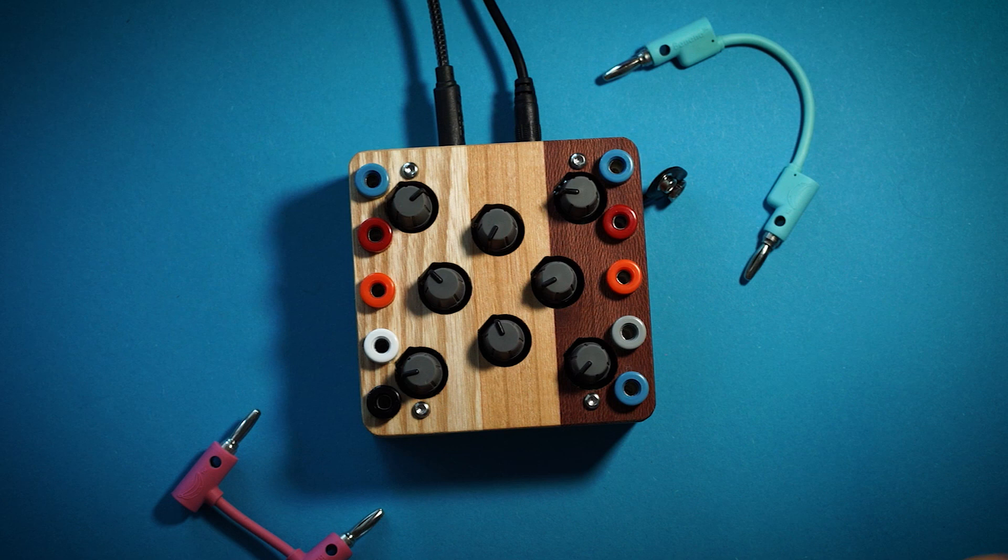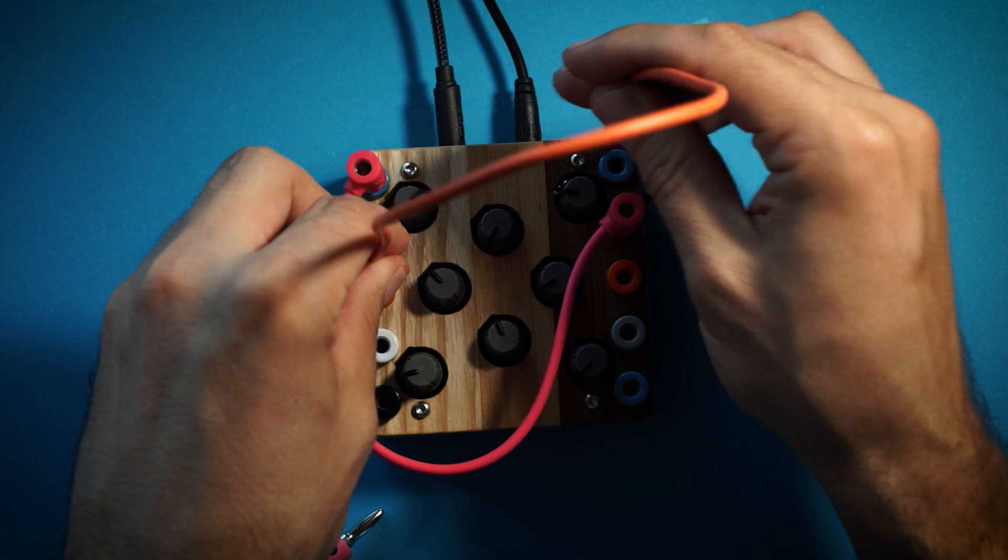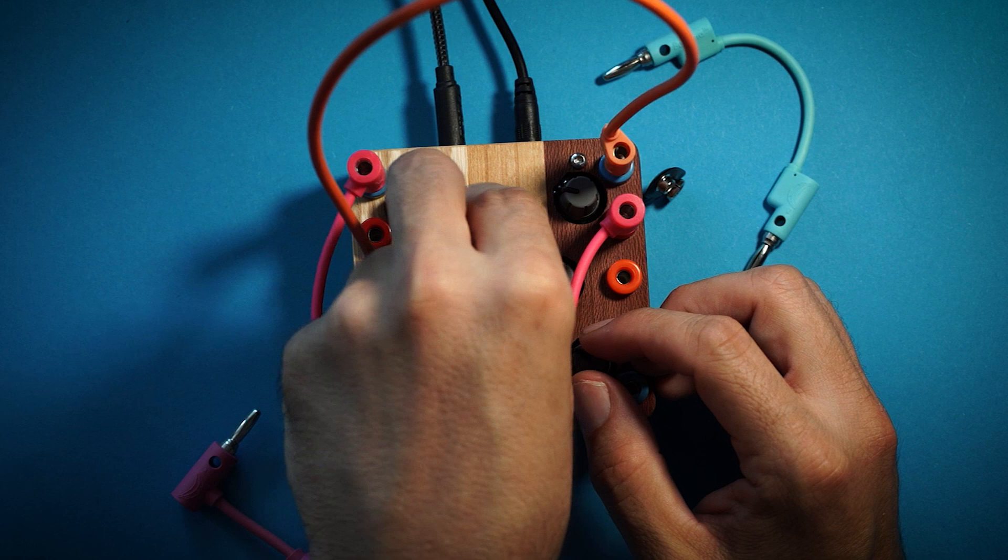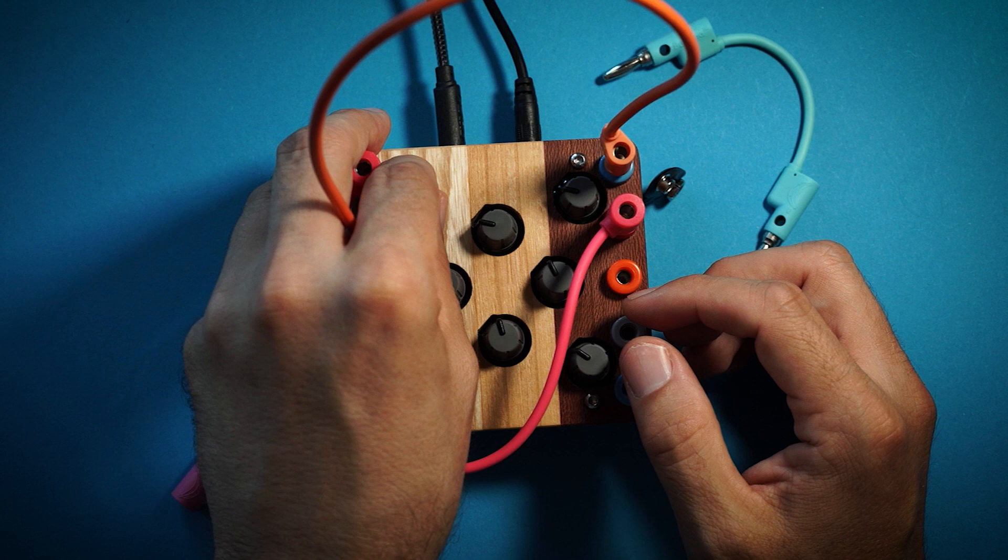Of course, you can use your normal patch cables. You can, let's say, take the square outs and put them into the CVs of the oscillators or the triangle out into the CV of oscillators and have them interact in a very peculiar way.